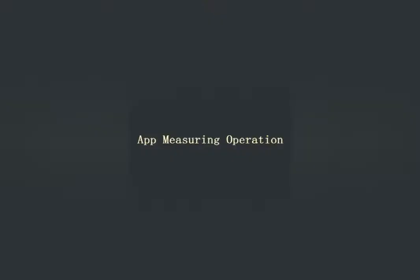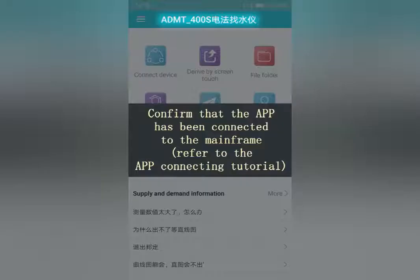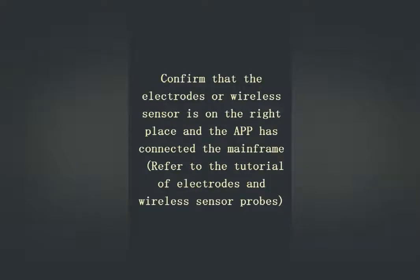For app measuring operation, open the app and confirm that it has been connected to the mainframe. Refer to the app connecting tutorial. Confirm that the electrode or wireless sensor is in the right place and the app is connected to the mainframe. Refer to the tutorial of electrodes and wireless sensor props.